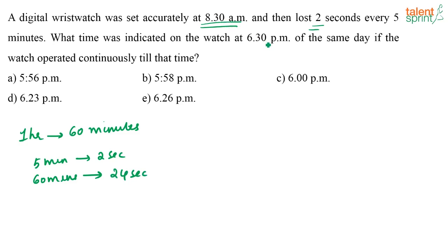In 60 minutes the watch will end up losing 24 seconds. Now from 8:30 AM to 6:30 PM, what is the time difference? They are asking what time was indicated on the watch at 6:30 PM on the same day. From 8:30 AM in the morning to 6:30 PM in the evening, the time difference is 10 hours.